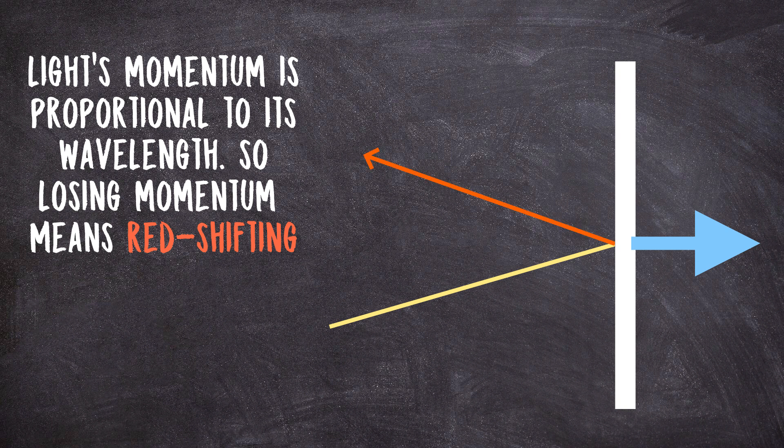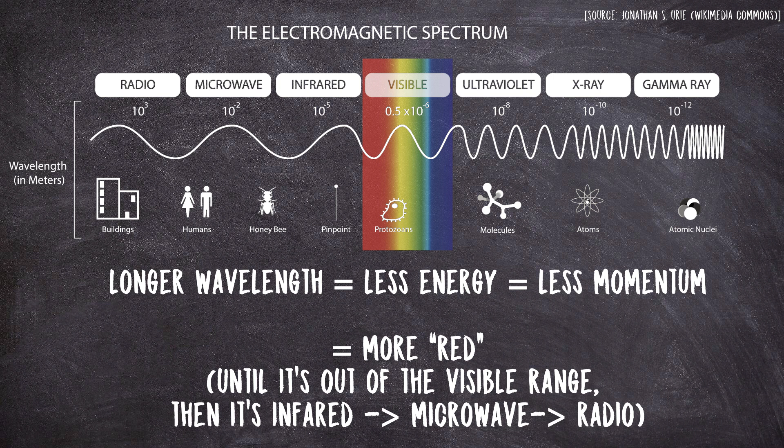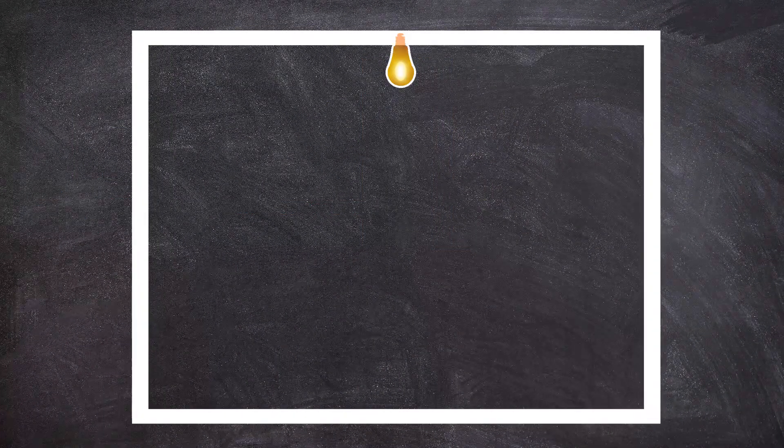It gets red shifted. And as this continues to happen with each bounce, as it pushes the wall more and more, our light will eventually red shift out of the visible range and eventually into infinitely long radio waves with negligible energy. And our room goes dark again.